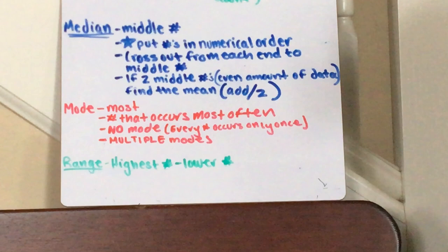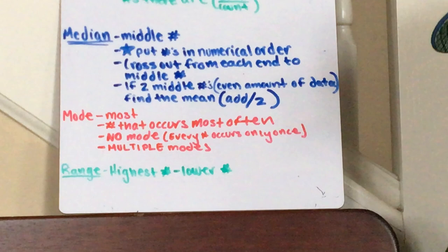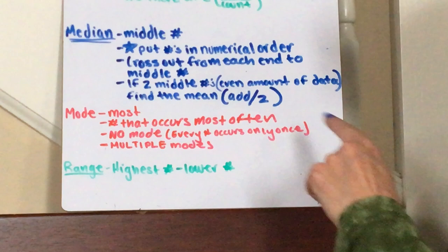So median, like when you're driving down the highway, while you guys will be driving in a few years, but that middle part is called the median. You're gonna put the numbers in numerical order, cross them out from end to end till you get to the middle number.